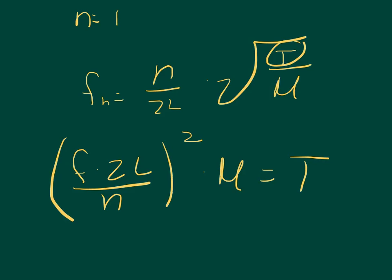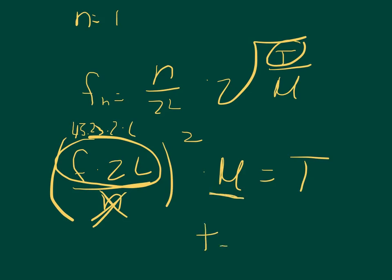Plugging in the values: 45.23 times 2 times 1.1, divided by 1, squared, then multiplied by the linear density of 0.023478 from Part A. Since N equals 1, dividing by it doesn't change anything. The result for tension in Part C is 232.4661 Newtons.